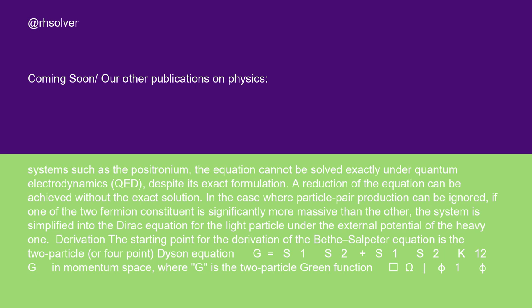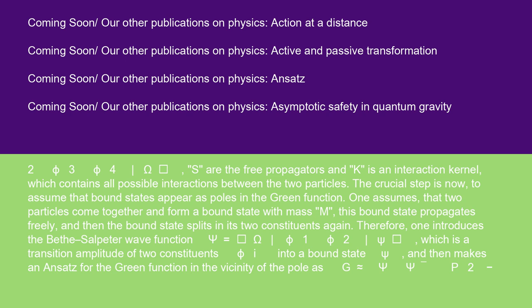Derivation: the starting point for the derivation of the Bethe-Salpeter equation is the two-particle, or four-point, Dyson equation G equals S1S2 plus S1S2K12G in momentum space, where G is the two-particle Green function omega phi1 phi2 phi3 phi4 omega. S are the free propagators and K is an interaction kernel, which contains all possible interactions between the two particles.